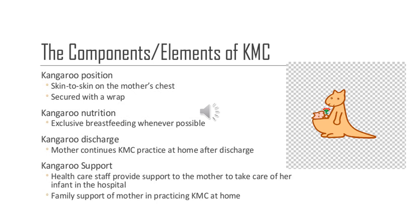The third important component is ambulatory care, which is provided to the mother if she wants to go home earlier. Before the mother goes home, she is properly counseled and educated about kangaroo mother care and how she should practice it at home as well. Proper counseling and support is also provided to the husband and the family so that the mother receives proper support from the family to provide kangaroo mother care at home.